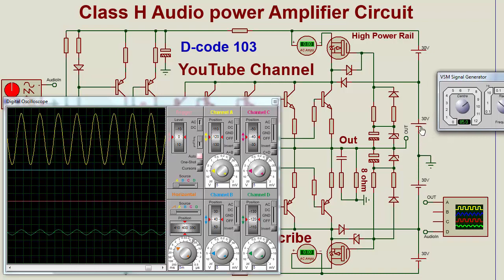This is because it uses different power rails — the power is divided. There is a low power rail of plus/minus 30 volts, and a high power rail of 60 volts with respect to ground.